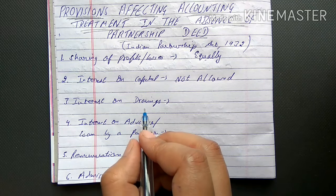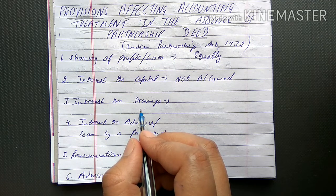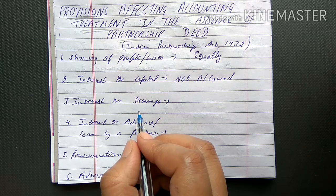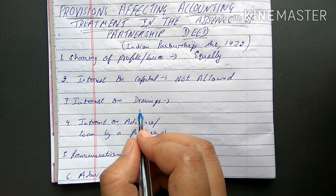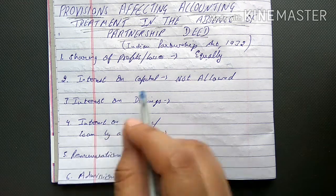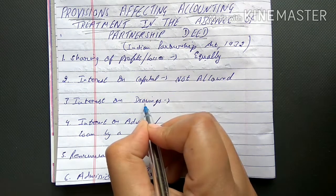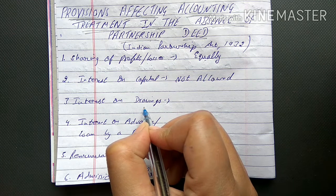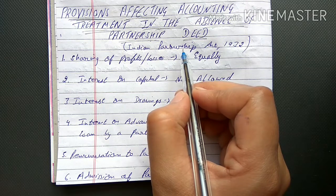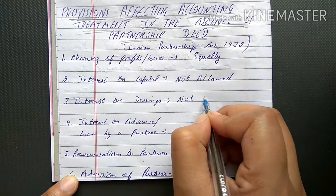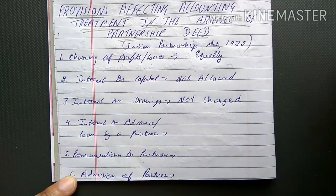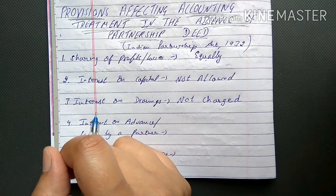The third provision is interest on drawings. Drawings means when a partner or owner withdraws money or goods from the firm for personal use. Sometimes firms create a deed deciding whether to charge interest if a partner withdraws too much. If the deed specifies charging interest on drawings, it is charged. But without a deed, the Indian Partnership Act 1932 states that no interest on drawings will be charged on any partner.